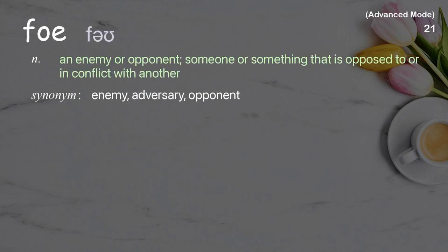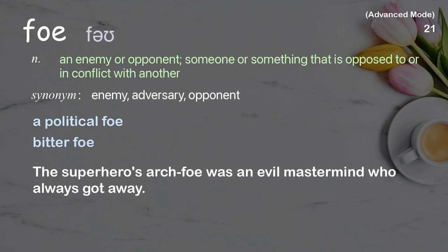Foe: an enemy or opponent; someone or something that is opposed to or in conflict with another. Examples: a political foe, bitter foe. The superhero's arch foe was an evil mastermind who always got away.